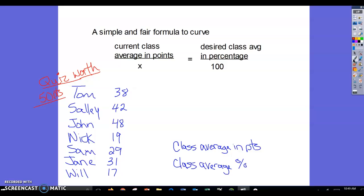If we have a quiz that is worth 50 points, what we're going to do is find the class average in points. So the class average in points is: add up the total points and then divide by the number of students.